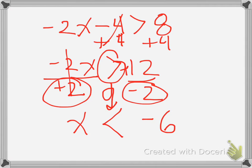If I were to divide by a positive number here, I would not flip that greater than sign. But since I divided by a negative 2, I had to flip the sign, and now it becomes a less than sign.